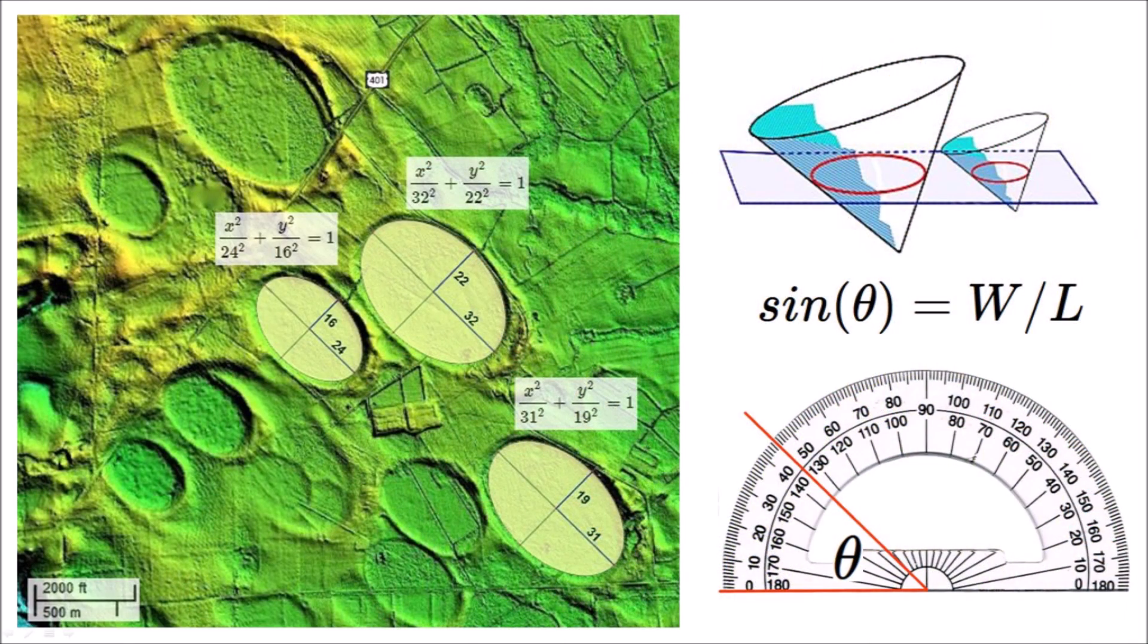The LiDAR images overcome many of the problems of aerial or satellite images that show a patchwork of farm fields and vegetation that obscure their geological features. The bays in the LiDAR images can be fitted with ellipses to show that the Carolina Bays are mathematically elliptical and not just oval. Ellipses are conic sections, and the inclination angle of a cone can be calculated from the width-to-length ratio of the ellipse. This corresponds to the angle of impact.